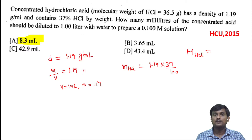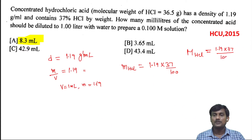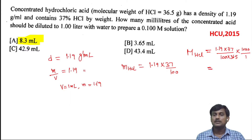M(HCl) = weight / molecular weight = (1.19 × 37/100) / 36.5 × 1000/V. V is 1 ml. When simplified, we get around 12. So the molarity of HCl is 12 before dilution.